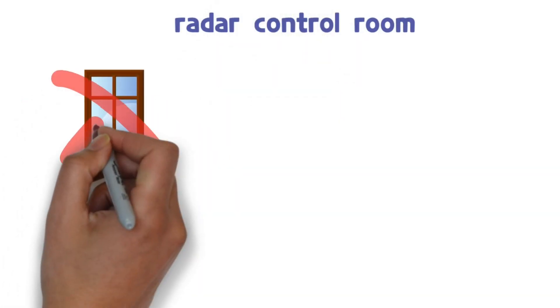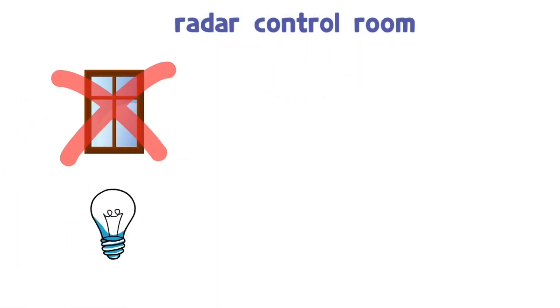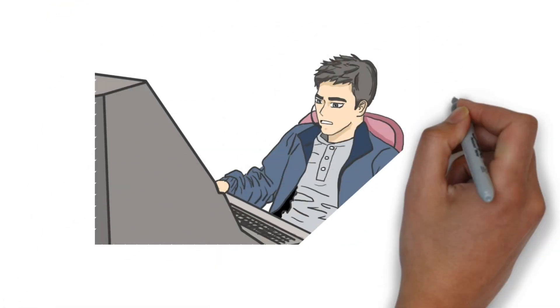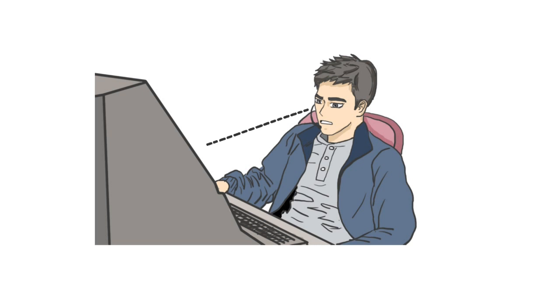There is no window in the control room, the lighting is dark, and there is no need to be in a high place. The radar controller sees aircrafts through the air traffic control radar.